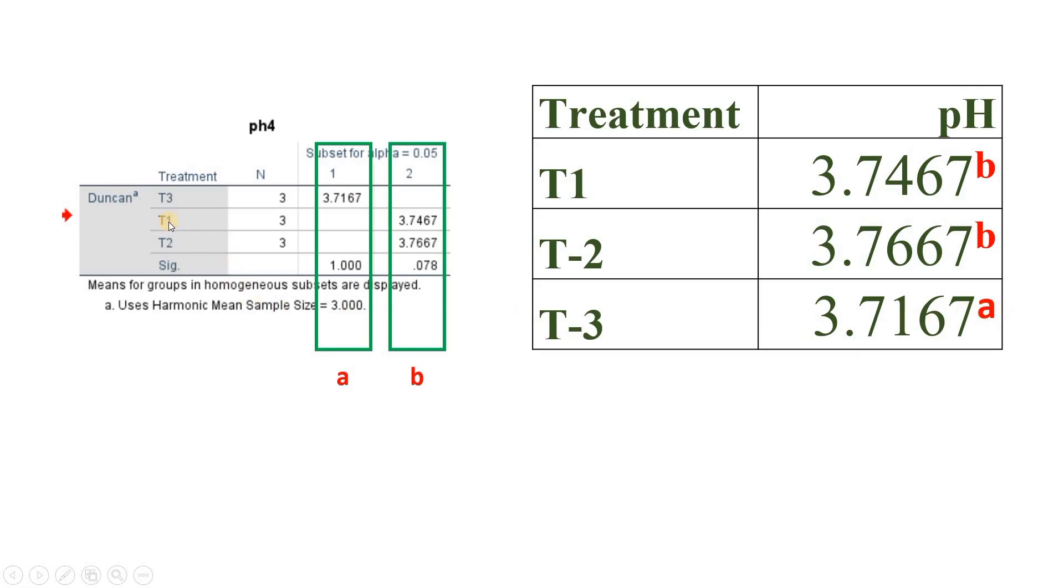So T1 and T2 are only in B column, so both will be written as B and B. So this is how we add the superscript in our table.